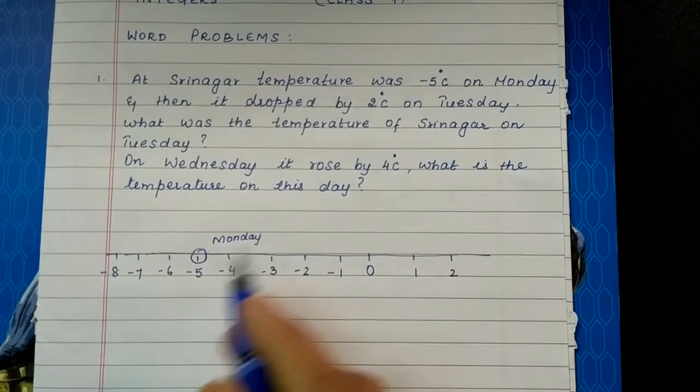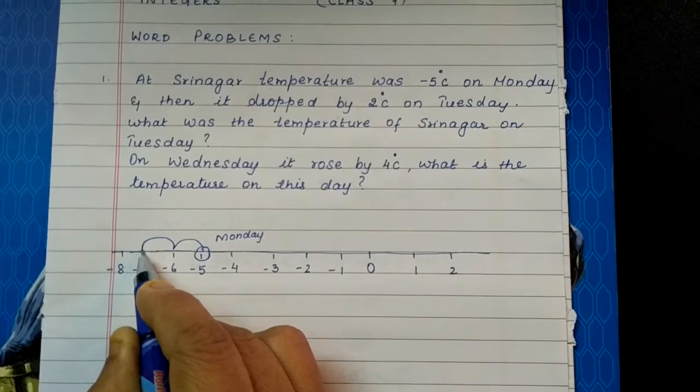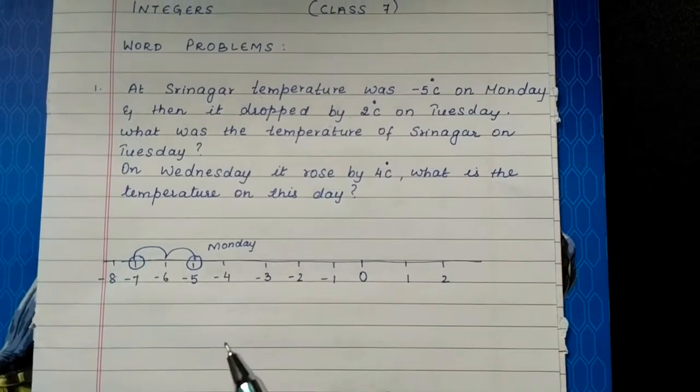So we will go on the left-hand side 2 degrees. 1 degree and 2 degrees. So what is the temperature on Tuesday? It is minus 7.